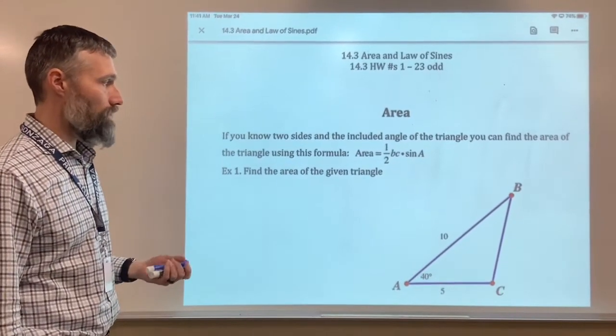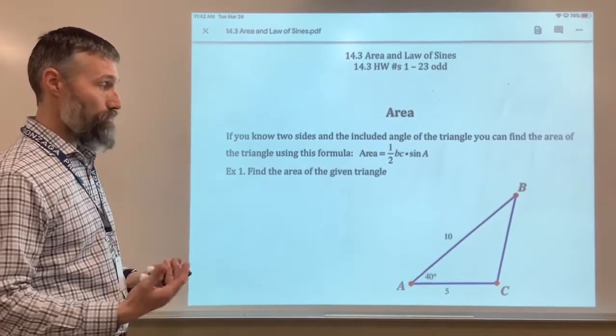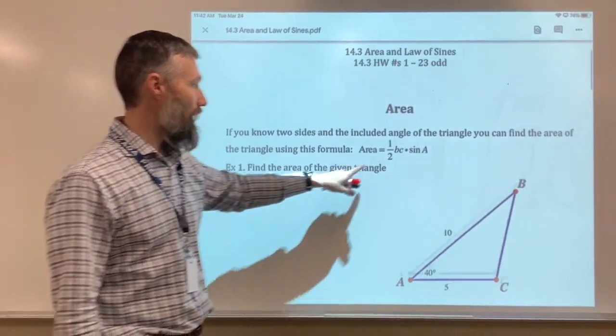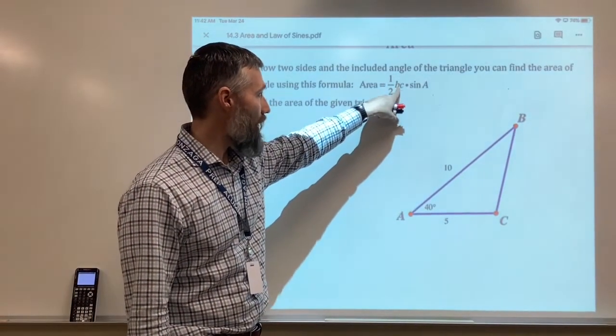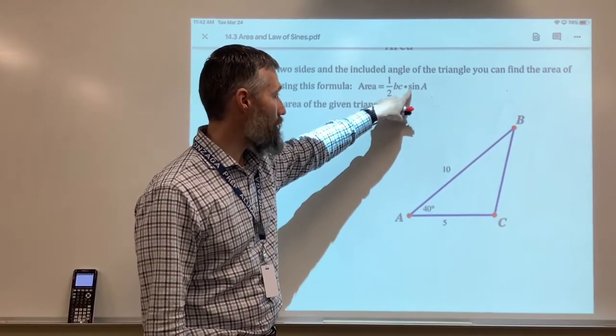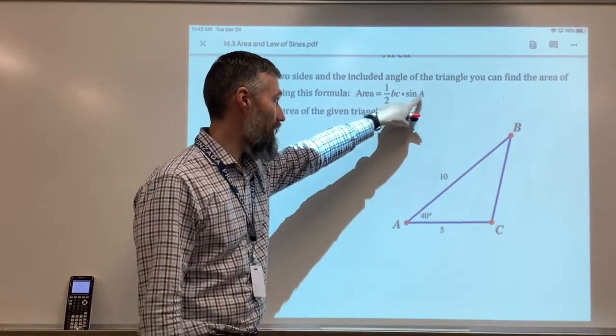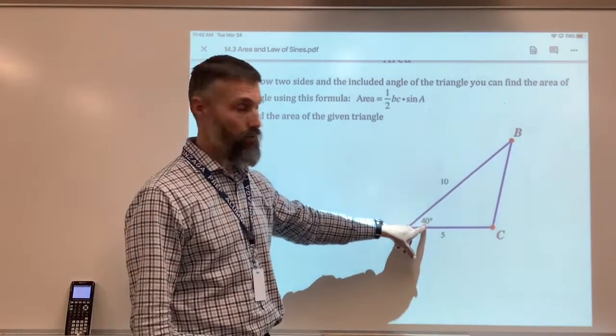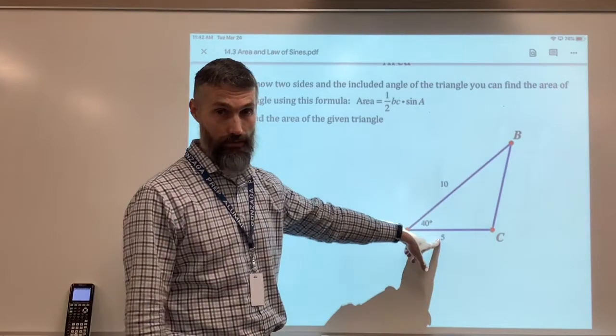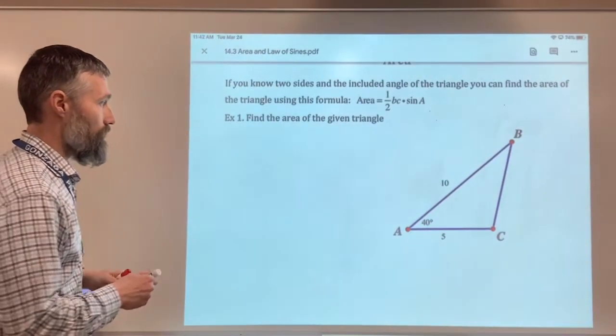The area of a right triangle is one half base times height. Here we don't have a base or a height. But what we do have is the area equals one half side B times side C times the sine of A. Side B and C and angle A can always change, but what we're looking at is an included angle of the two given sides. If you have that, you can solve for the area just by simply doing this.